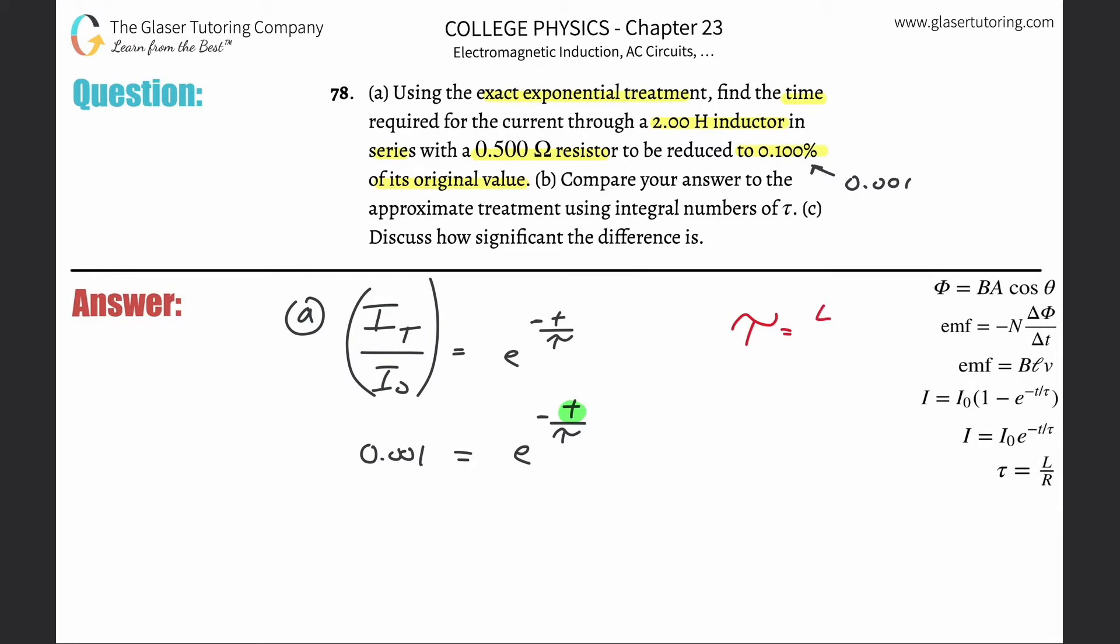We know that the time constant is equal to the inductance divided by the resistance. So here the inductance is going to be 2 henrys divided by the 0.5 ohms, so this is simply going to be 4. So get rid of the time constant here and write a 4 in there, and that's 4 seconds.